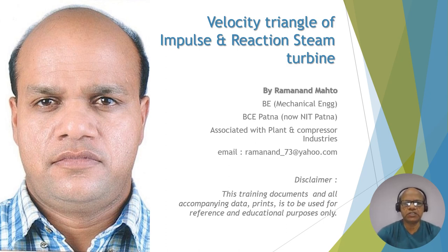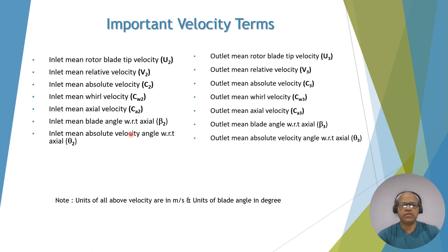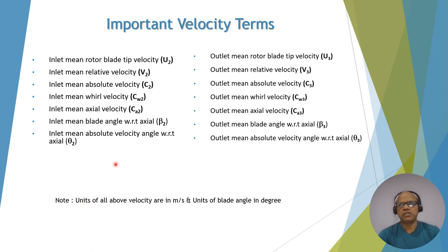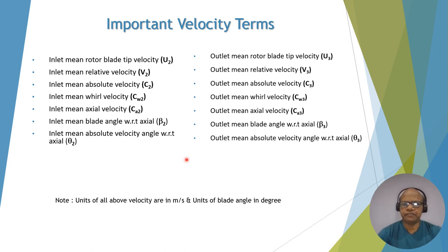Let's begin the discussion on velocity triangle formation of impulse and reaction steam turbine. These velocity triangles are constructed at the mean position of moving blades at inlet and outlet. These are the inlet condition or inlet velocity terms. Normally in a turbine, inlet is denoted by suffix 2 and outlet as 3. Measurement and construction is done at the mean position. Velocities are in meters per second and blade angle is in degrees.